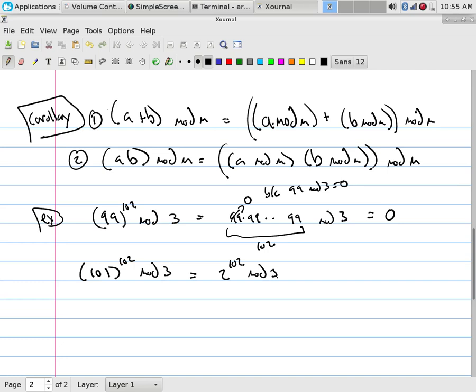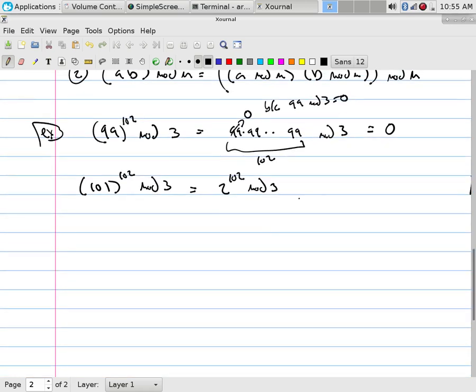Well, that's not... How do I do this? Well, that's actually, if I look at this, what are we doing? That's actually 2 times 2 times 2 times 2, and there's how many of these? 102 of these mod 3.